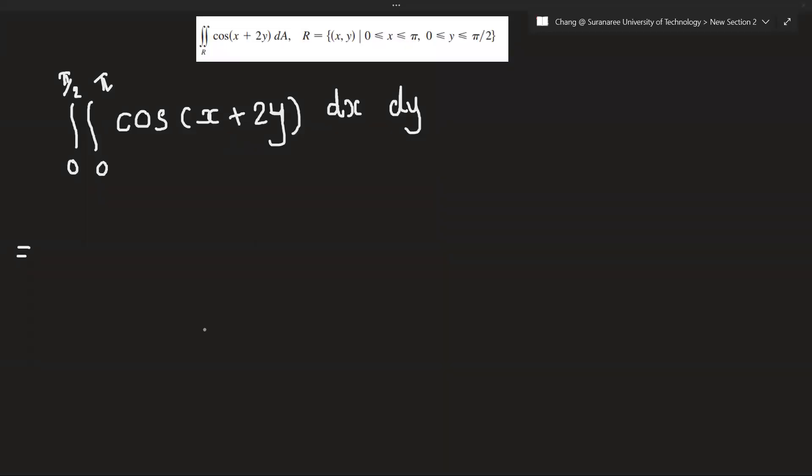Hello everyone, welcome back from Math by Chang channel. So today we're going to solve cos x plus 2y with double integration. So the question says the value of x ranges from 0 to pi and y ranges from 0 to pi over 2.